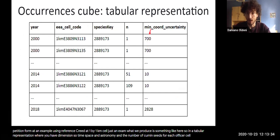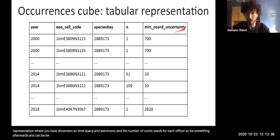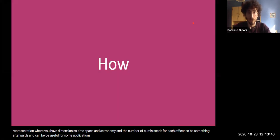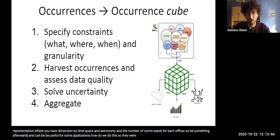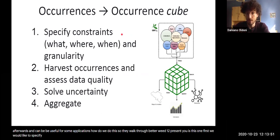This is something that we will see afterwards and can be useful for some applications. How do we produce this? So the workflow that we want to present to you is this one. First, we would like to specify some constraints about what we want to investigate, where and when, and the granularity of this partition.